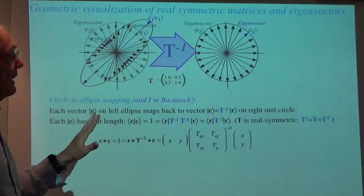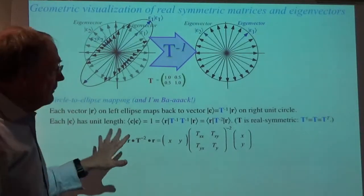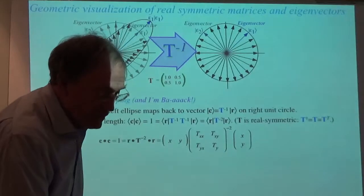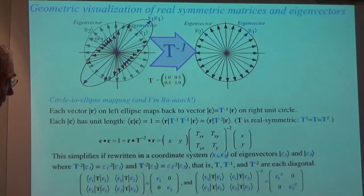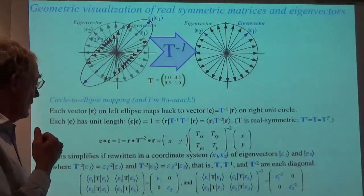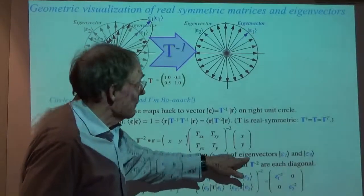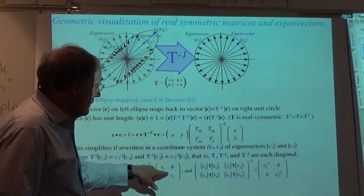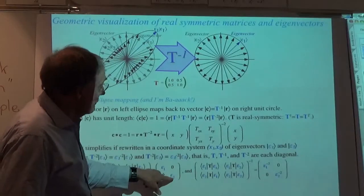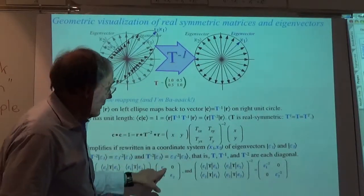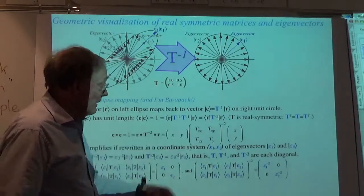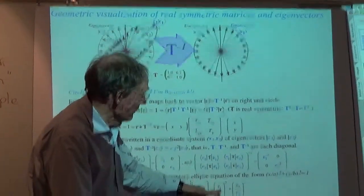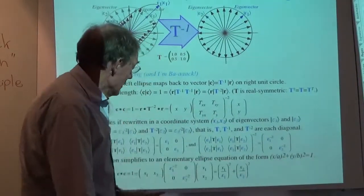The general ellipse equation is a quadratic form. We've got this matrix, which is the square of the inverse of the matrix that turned the circle into an ellipse. One equals the scalar product of r with the inverse squared and the scalar product again on the right with the vector r. Writing this in the coordinate system of epsilon one and epsilon two, you get just those numbers — one and a half for epsilon one and one half for epsilon two — the eigenvalues. This gives you an equation for an ellipse: x squared over a squared plus y squared over b squared equals one.